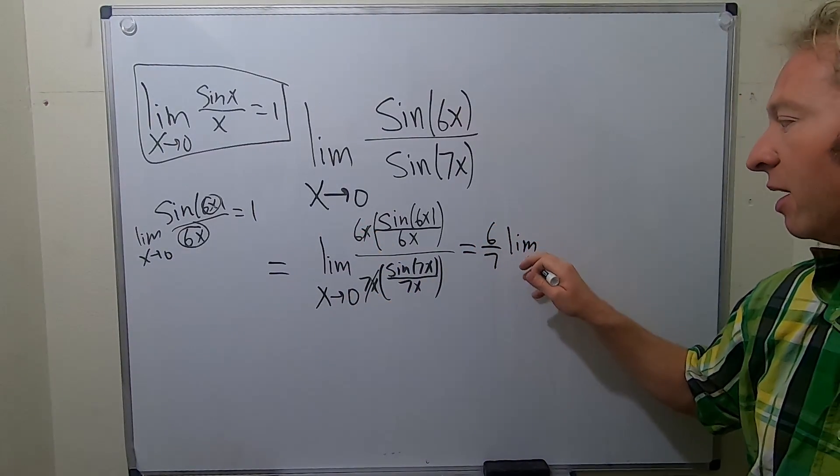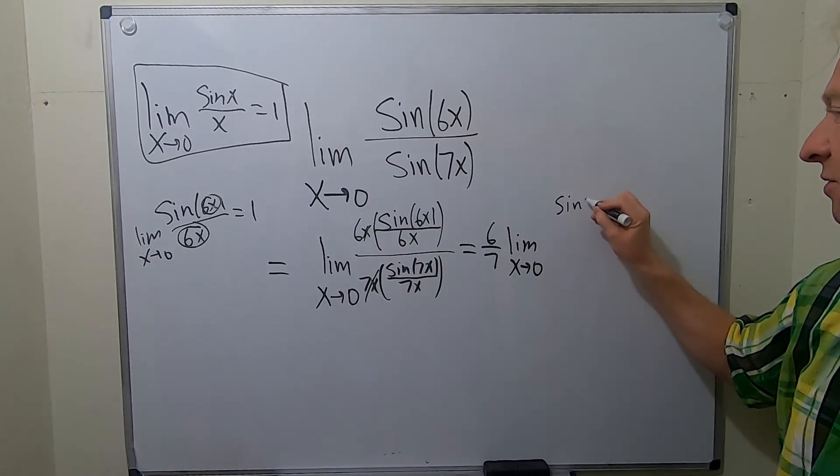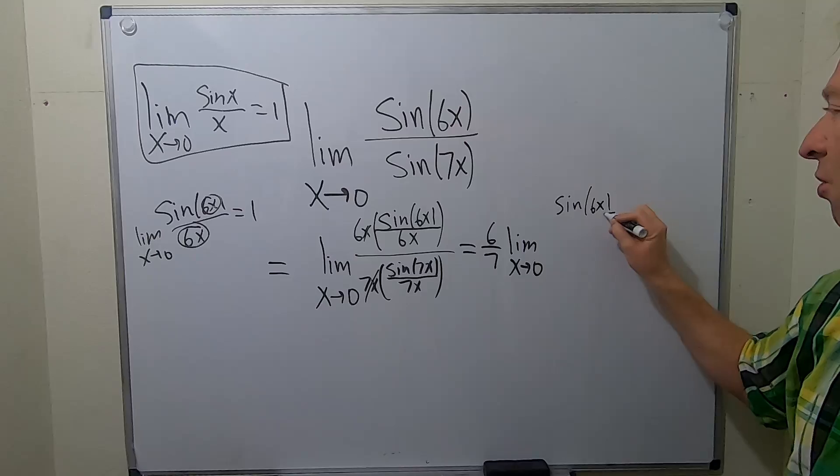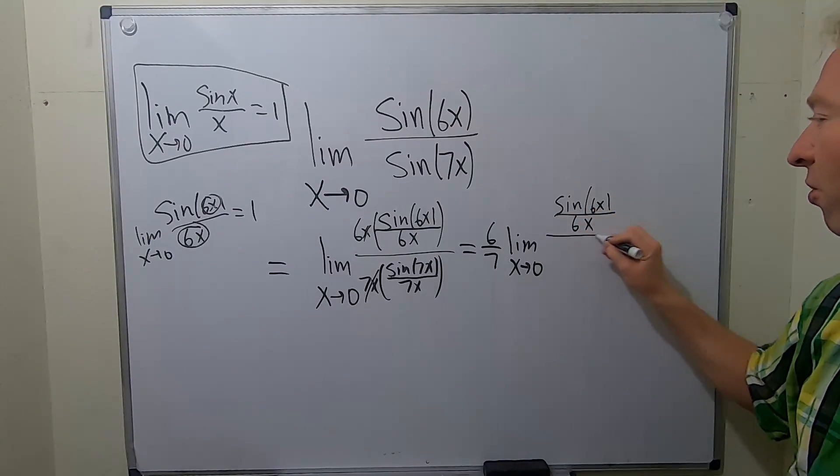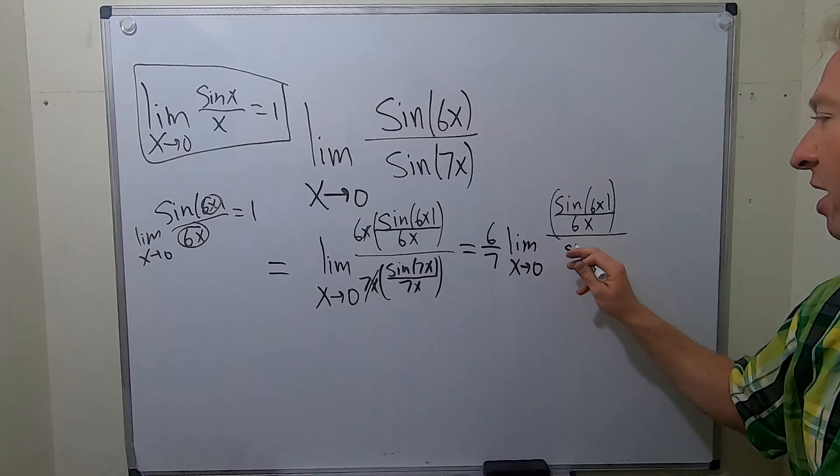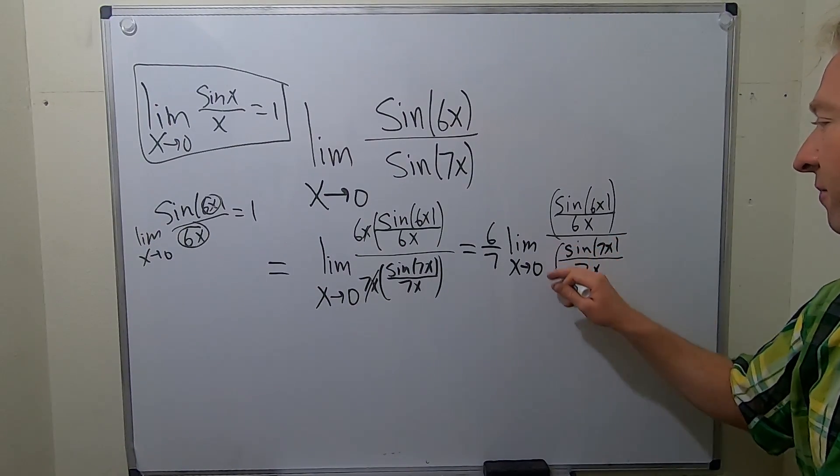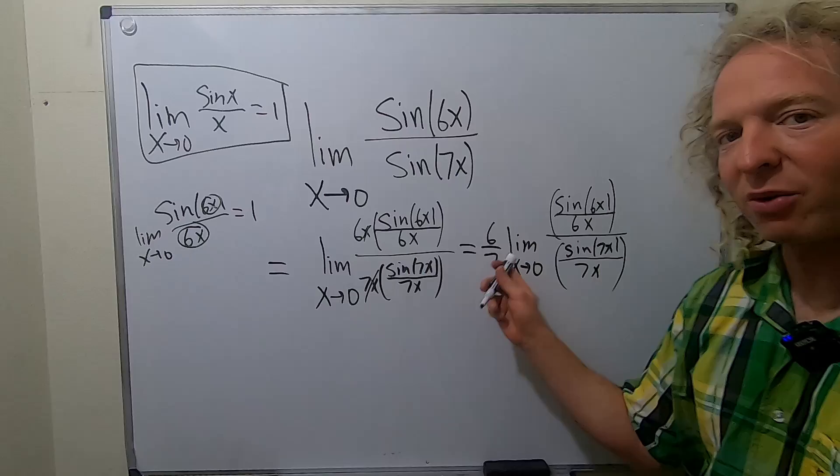Limit as x approaches zero. And then we have, I'm going to write it one more time, sine of 6x over 6x over, and then here we have sine of 7x over 7x. So sine of 7x over 7x. Works out really nice.